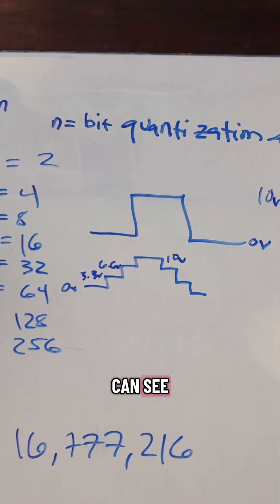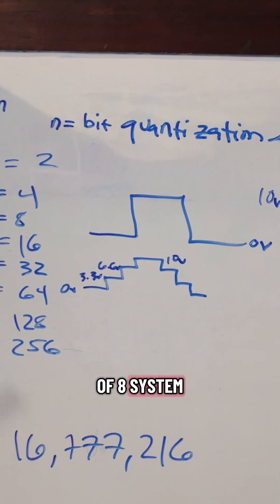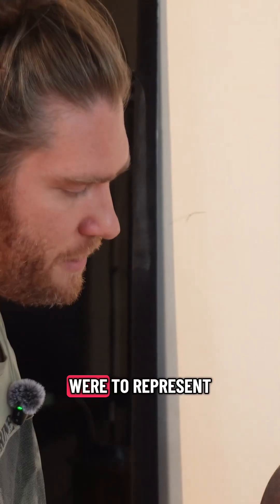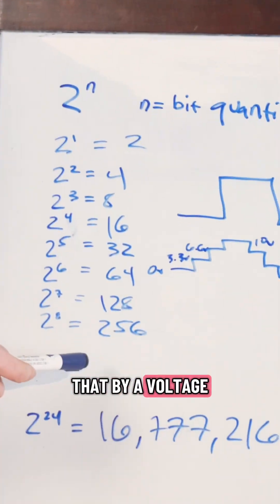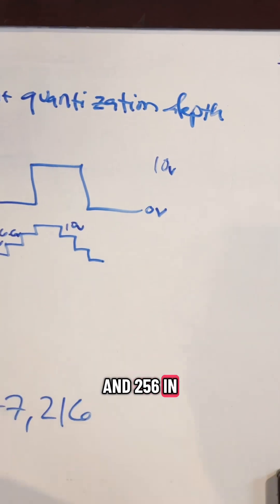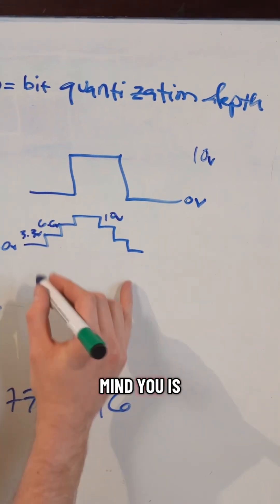So as you can see, for a 2 to the power of eight system, if we have 256 discrete steps, then if we were to represent that by a voltage with our full scale being 256, and 256 in binary, mind you, is one.